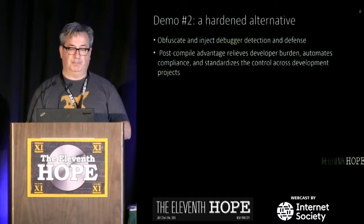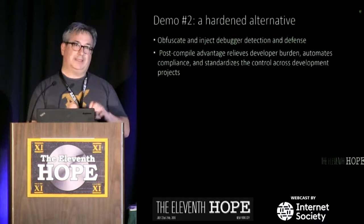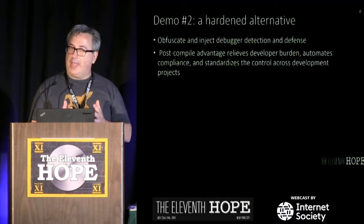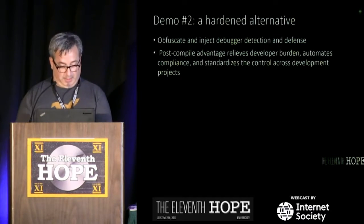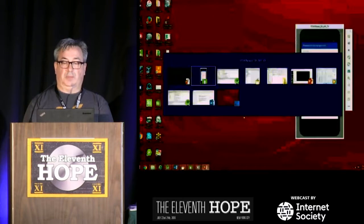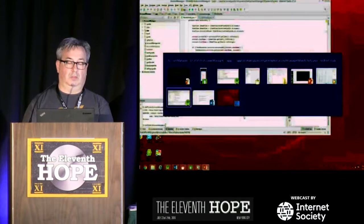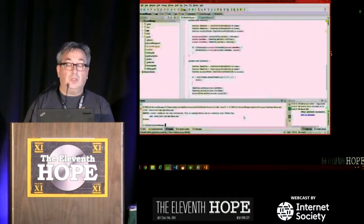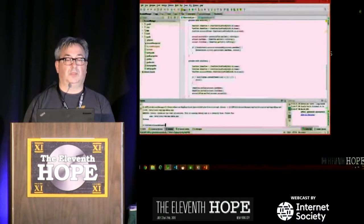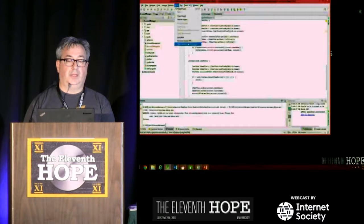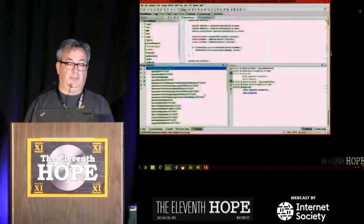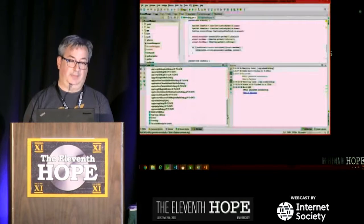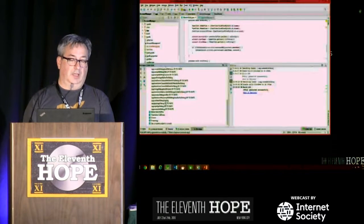For the second demo: two criteria — stop reverse engineering from being so easy, but do it in a way that's not burdensome. The approach is to quickly obfuscate the APK and inject debug detection. A new APK is built using the obfuscator — without touching any code. The dash-O obfuscator runs, does its thing, and produces a new version of the application.